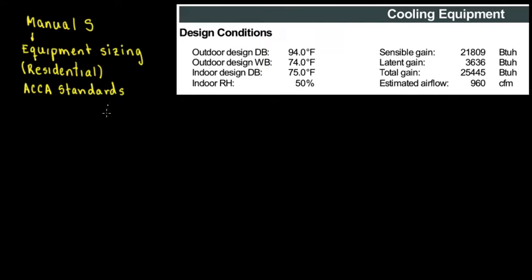It's a method. So, this is also a book. It's available online if you go to the website of ACCA and you're going to be able to find anything residential. You're going to have Manual J, which is heat load calculations, Manual S, which is Equipment Sizing, and Manual D, which is duct design. So, generally, it comes in this order.